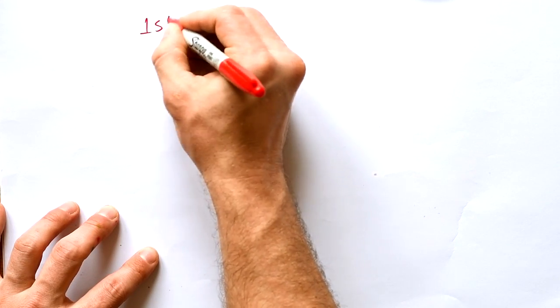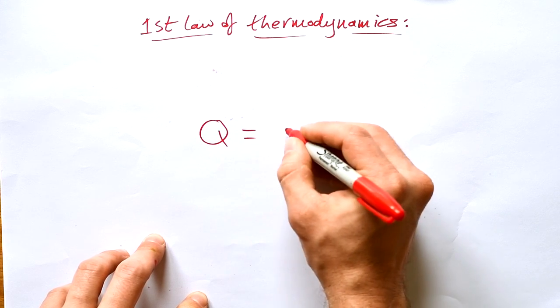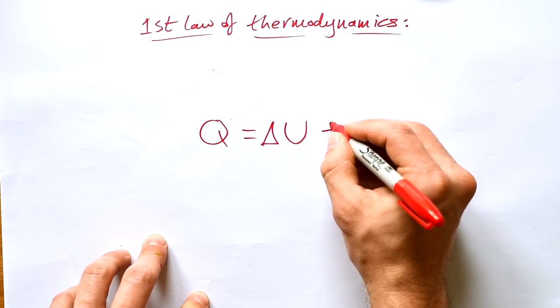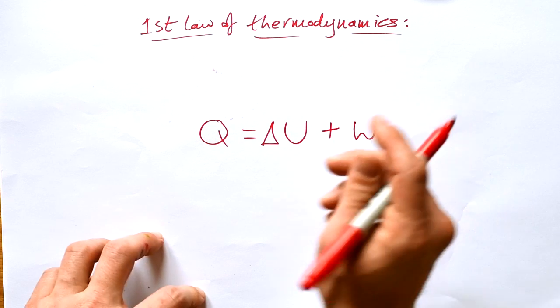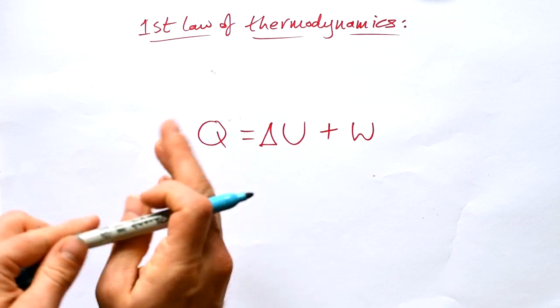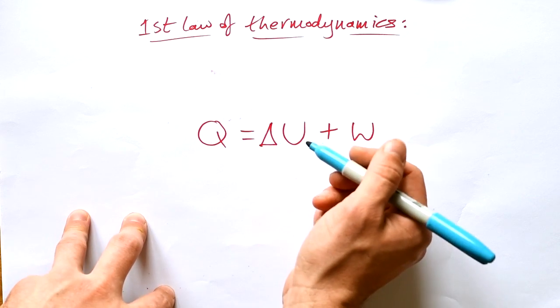Let's start off with the first law of thermodynamics and that is Q equals delta U plus W. Now what are all these? These are all energies. This rule is true for gases so we need to be thinking about these energies in terms of gases.